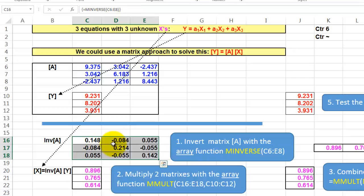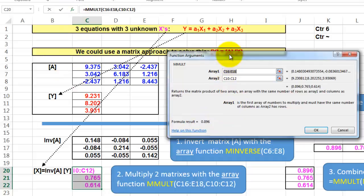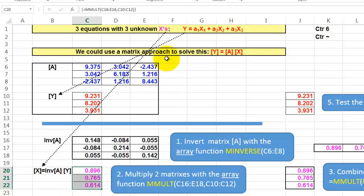The next step is that we are going to multiply those two matrixes with the array function MMULT. Again, it's an array function, so I select multiple cells, and I find in there the function MMULT that says I want array 1 C6 through E18, that is the inverse array. And array 2 is C10 through C12. Don't forget Ctrl-Enter. And these are the X values.